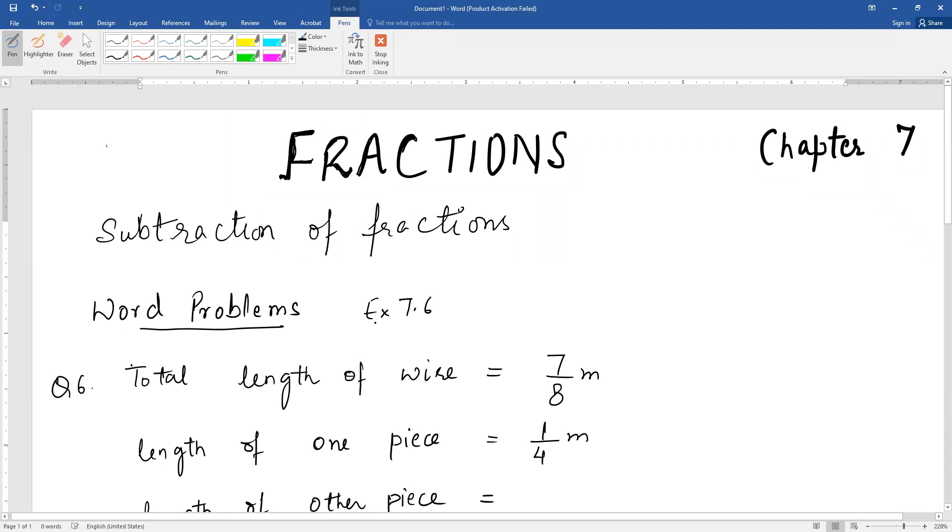Now read question number 6. It states that a piece of wire is 7/8 meters long and it broke into two pieces. One piece is 1/4 meters. So what will we do?